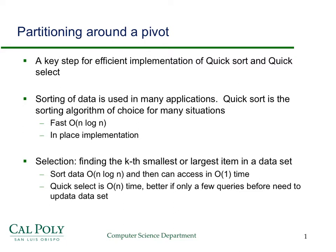And then selection is an important algorithm for finding an order statistic, the k-th smallest or largest item in a dataset. It's true that you could just sort the data in n log n time, and then you'd be able to access the k-th smallest or largest element in constant time. But if you only have to do that a few times, then you're better off using something like quickselect, which will find the k-th smallest item in linear time.